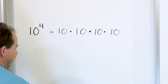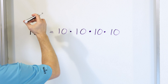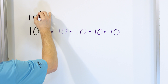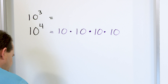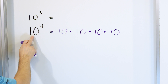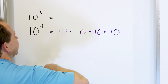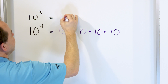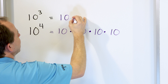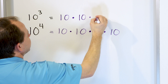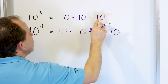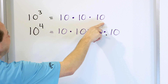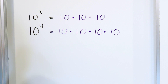What do you think is going to happen if we have the number ten raised to the power of three? If ten to the fourth is ten multiplied together four times, then ten raised to the power of three is just ten multiplied by ten multiplied by ten — only three tens because the exponent is three.